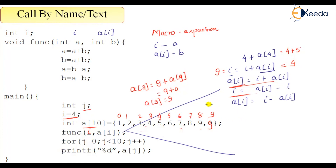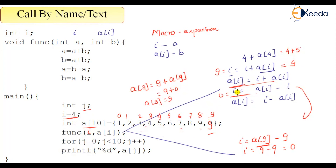For the next statement, a[i] — since i is now 9 — this becomes a[9] = i + a[i], which is 9 + 0, so a[9] becomes 9. That position now changes to 9. Then again we change i: i = a[i] — since i is 9 this is a[9] minus 9, which is 9 minus 9, so i becomes 0.